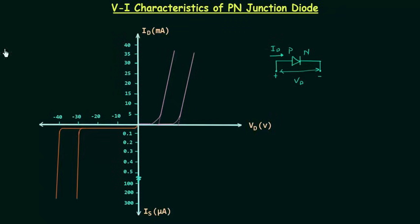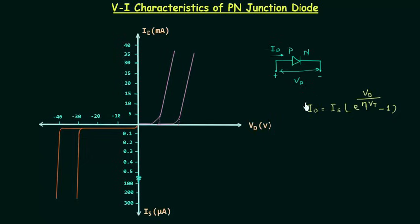From the diode current relation, Id is equal to Is — where Is is the reverse saturation current — multiplied by the quantity e raised to the power Vd divided by eta times Vt, minus 1. Here eta is the ideality factor. This is the equation of diode current.